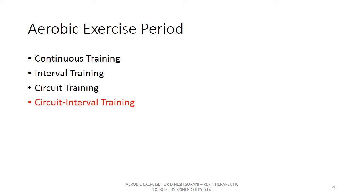The fourth type is circuit interval training. This is somewhat similar to interval training, but here instead of one single continuous exercise, there is a circuit type of training in which there is a relief period. In circuit interval training, the person undergoes multiple circuits where certain stations have a low intensity work relief interval. This is a modification of circuit training which can be utilized as circuit interval training.